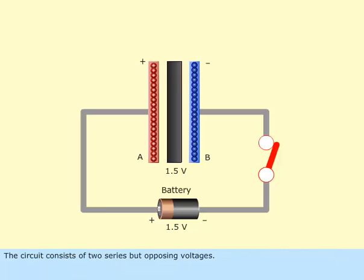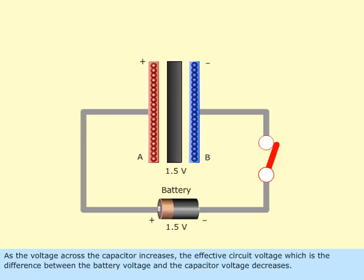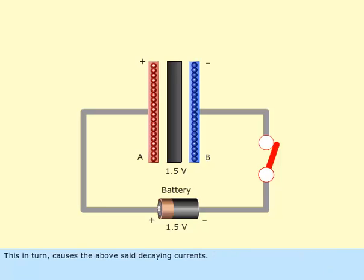The circuit consists of two series but opposing voltages. As the voltage across the capacitor increases, the effective circuit voltage, which is the difference between the battery voltage and the capacitor voltage, decreases. This in turn causes the above-set decaying currents.